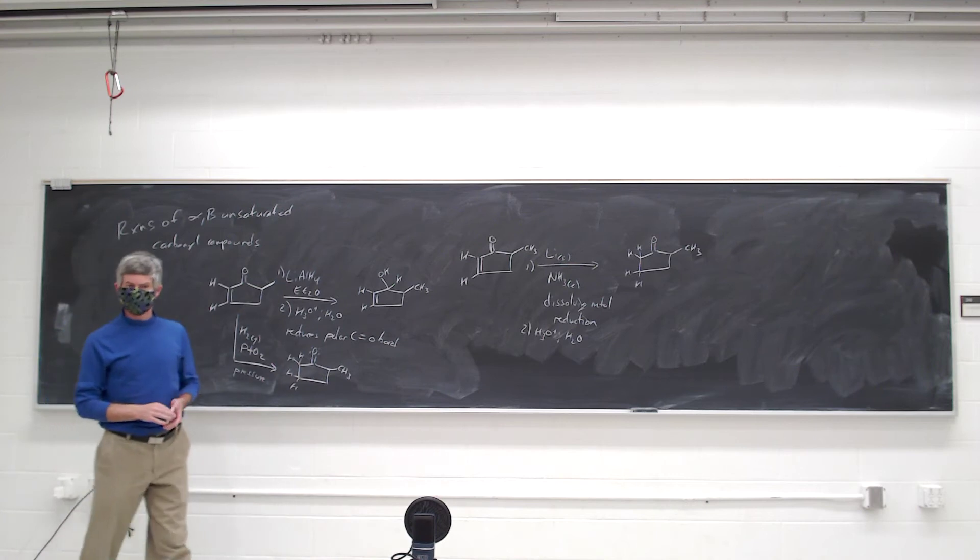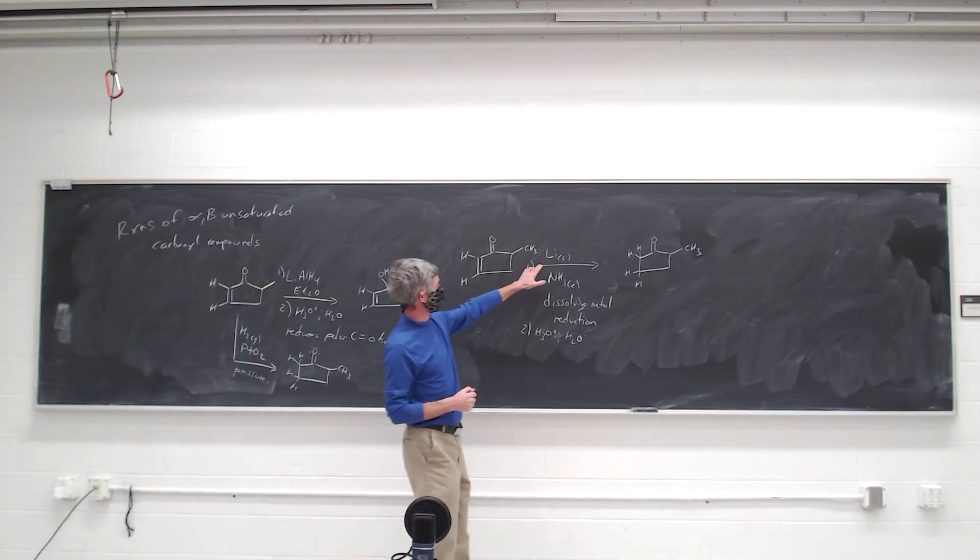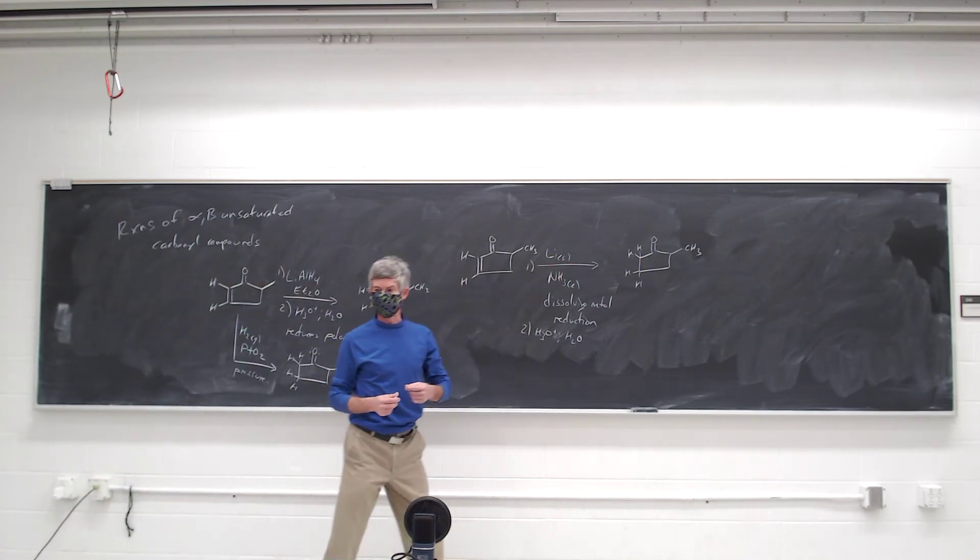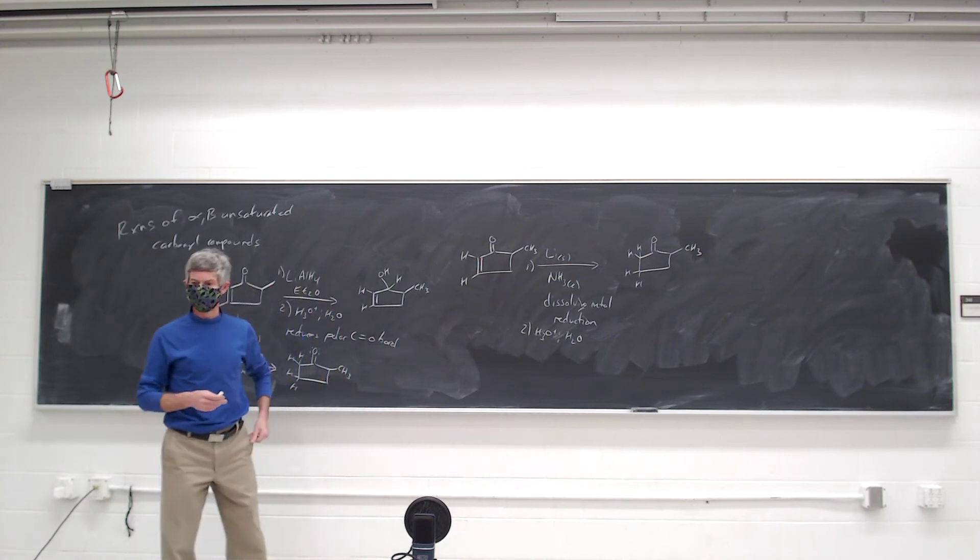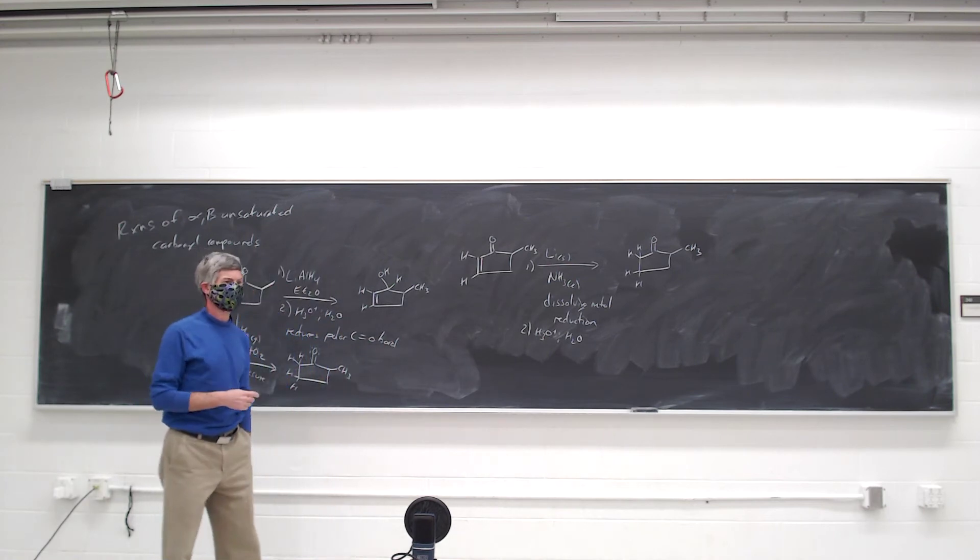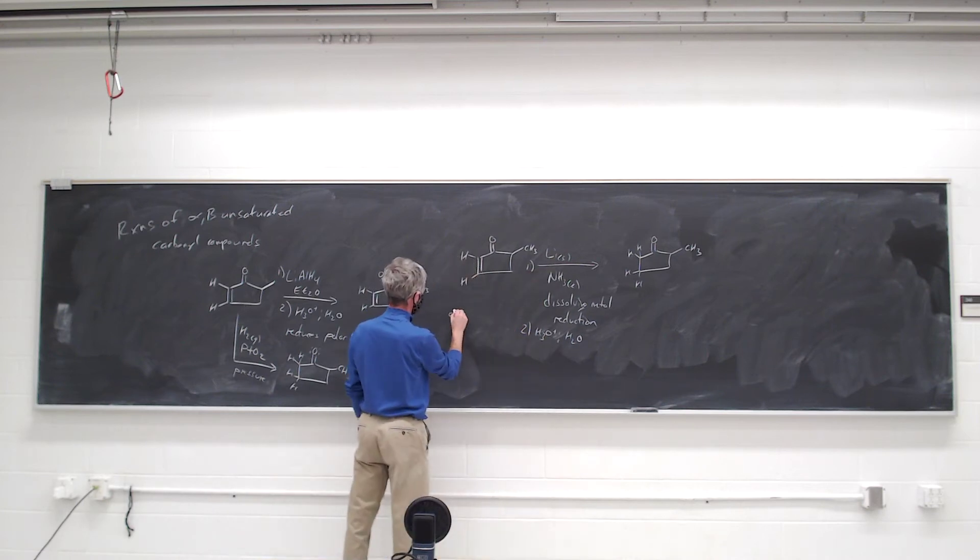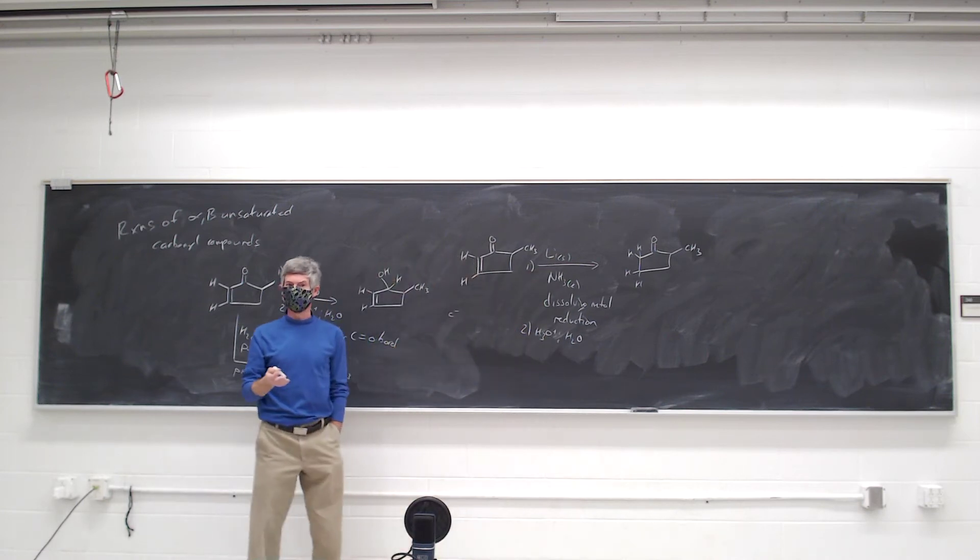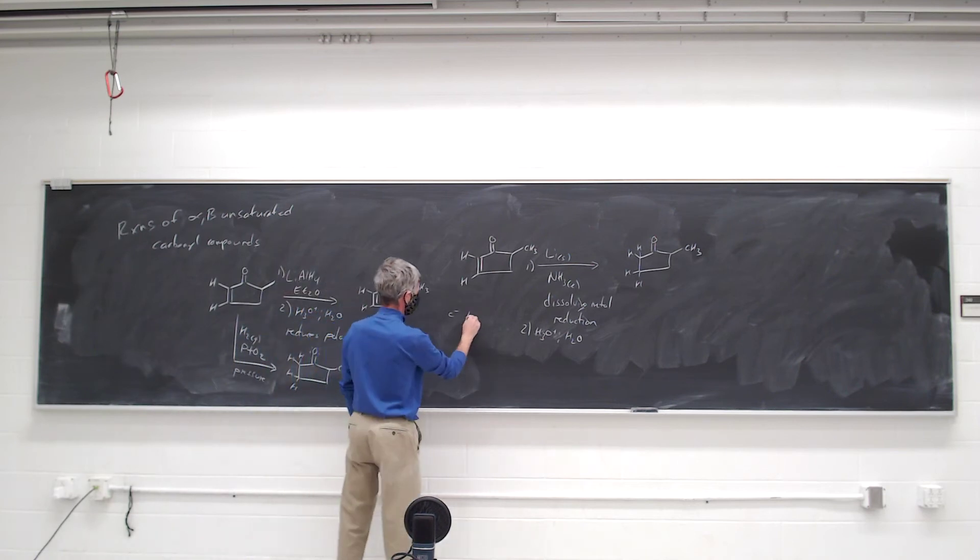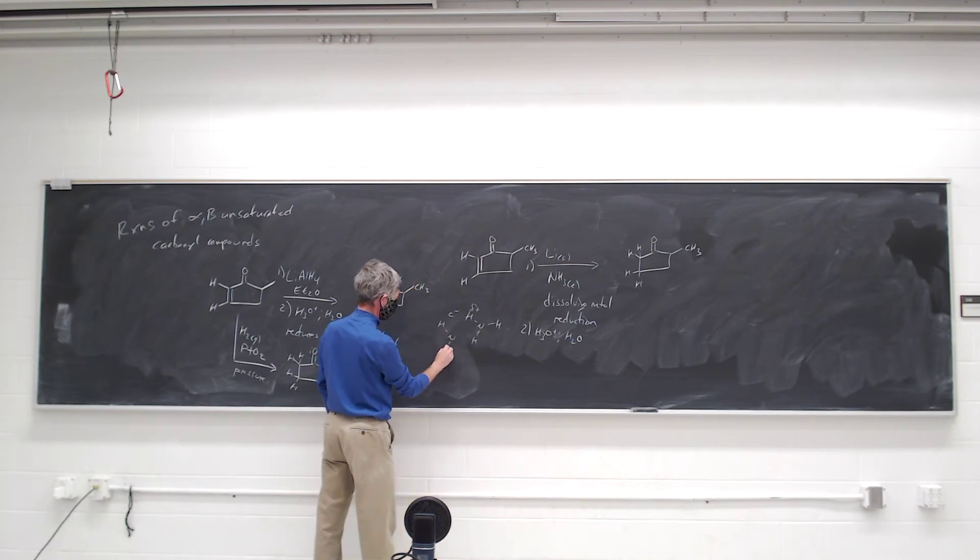And in order to think about that, we have to keep in mind, what is the dissolving metal reduction? What's the actual reagent we're looking at? So lithium gives up its electron, and we've actually just got an electron floating around in solution, surrounded by partially positive hydrogen of ammonia in what we call the solvated electron.